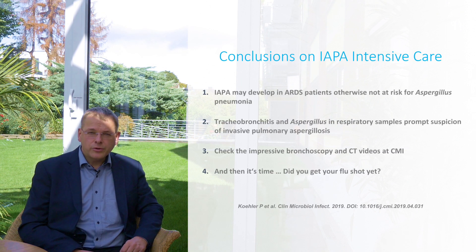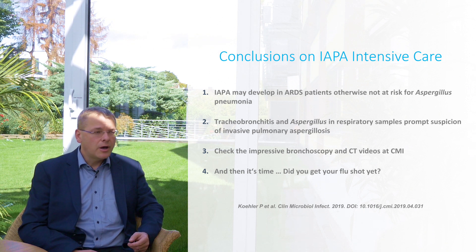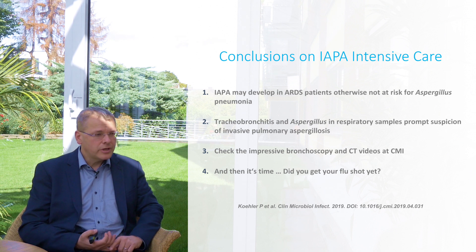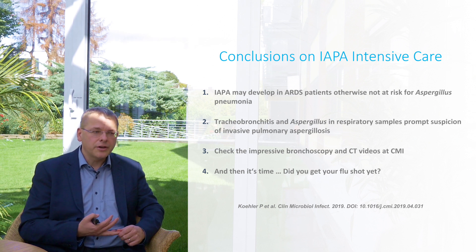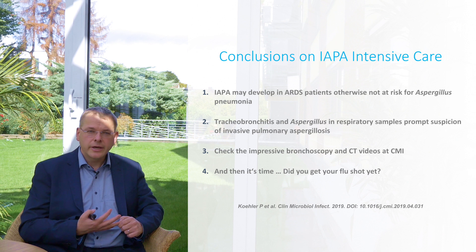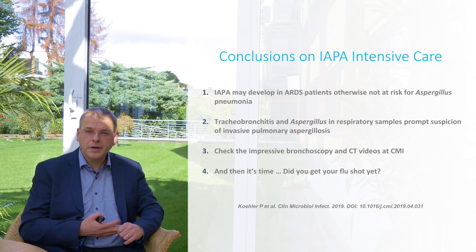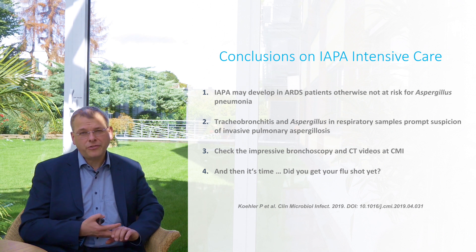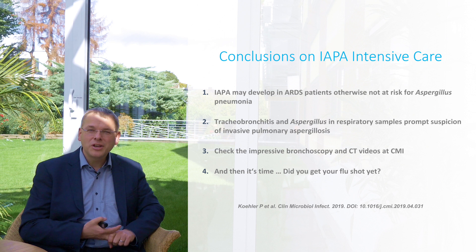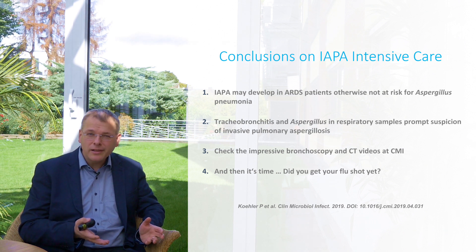The conclusions of our review on influenza-associated pulmonary aspergillosis and intensive care management are as follows. IAPA may develop in ARDS patients who are otherwise not at risk for Aspergillus pneumonia — influenza alone puts them at risk. Tracheobronchitis and Aspergillus in respiratory samples should prompt suspicion of invasive pulmonary aspergillosis, and biopsy along with all available tests should be run simultaneously to confirm the suspected diagnosis as fast as possible. Check the impressive bronchoscopy and CT videos at CMI — Philip always does these videos in his papers wherever possible and it is really instructive.